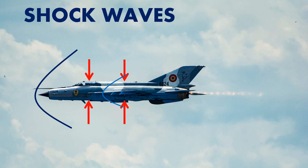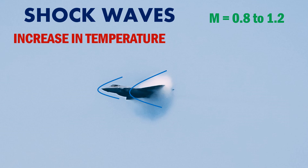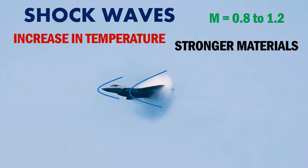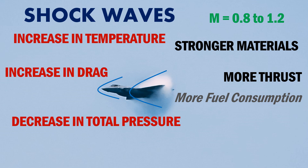Shock waves are a thin layer or region that initially forms on the top of the wing when an aircraft enters the transonic range from Mach 0.8 to 1.2. When the aircraft accelerates to supersonic speeds, this shock wave is formed at the leading edge of the aircraft. Because of the shock wave, there is a severe increase in the temperature of the air downstream, so stronger materials are needed at the leading edge to withstand the high temperatures. There is also a severe increase in drag due to shock wave formation, so the engines need to produce more thrust to overcome this drag, and hence more fuel is consumed. There is also a decrease in the total pressure of the air because of the shock wave, which will reduce the engine's efficiency.